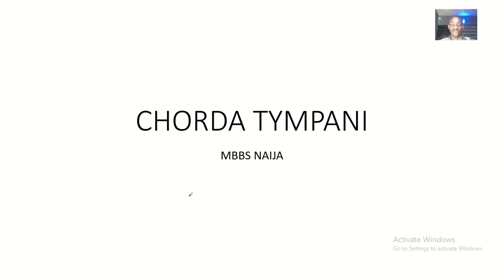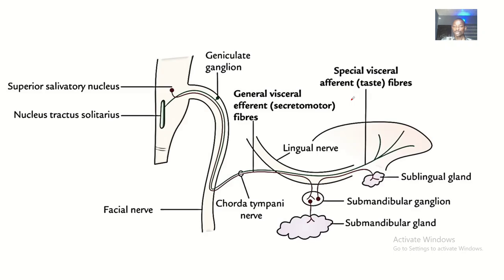The next branch of the facial nerve we'll be talking about is the Chorda Tympani. We'll get to see the Chorda Tympani in pictures, and we'll talk about the structures that it supplies. Looking at this picture, this is the Chorda Tympani — just trace these branches.